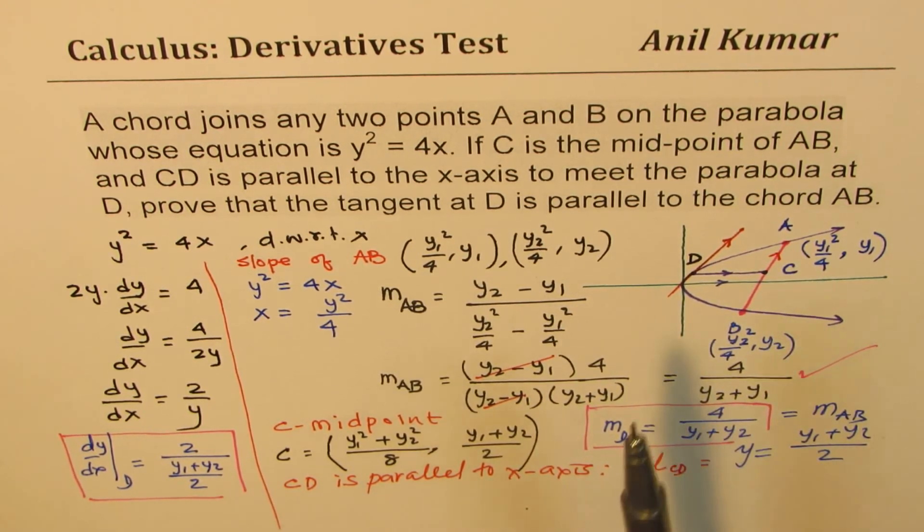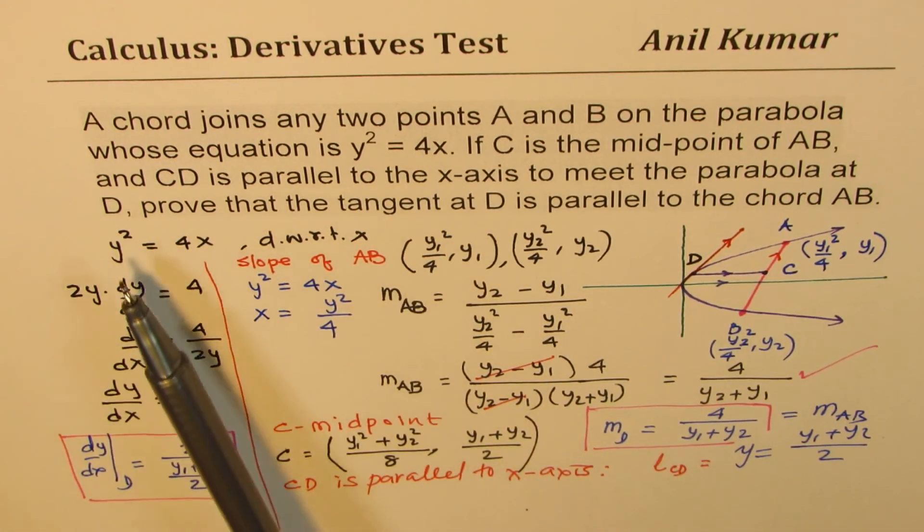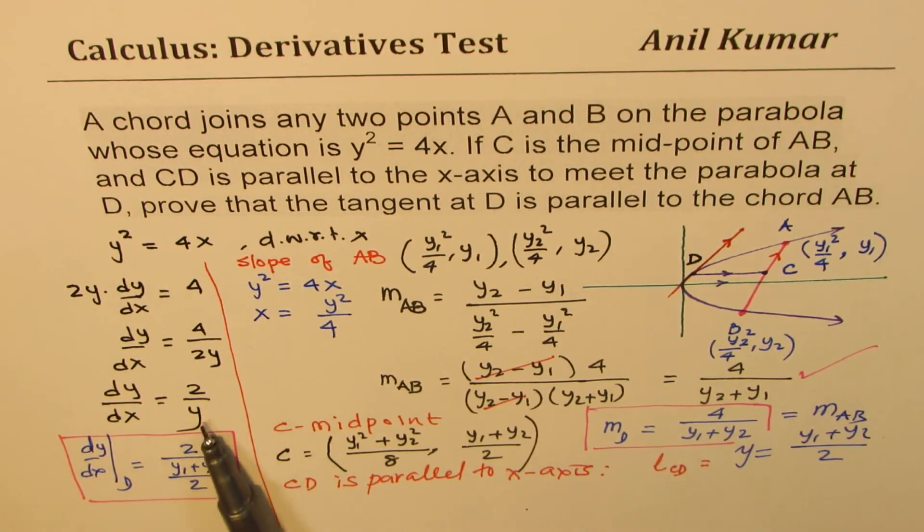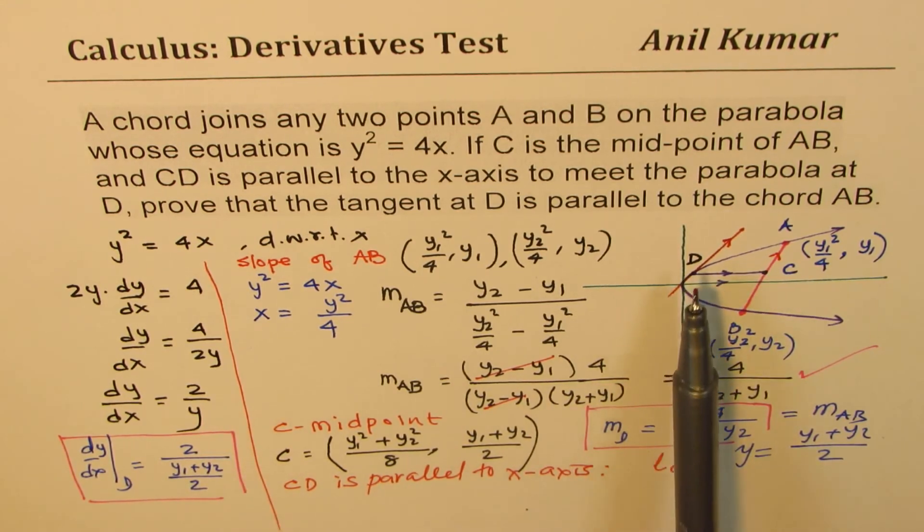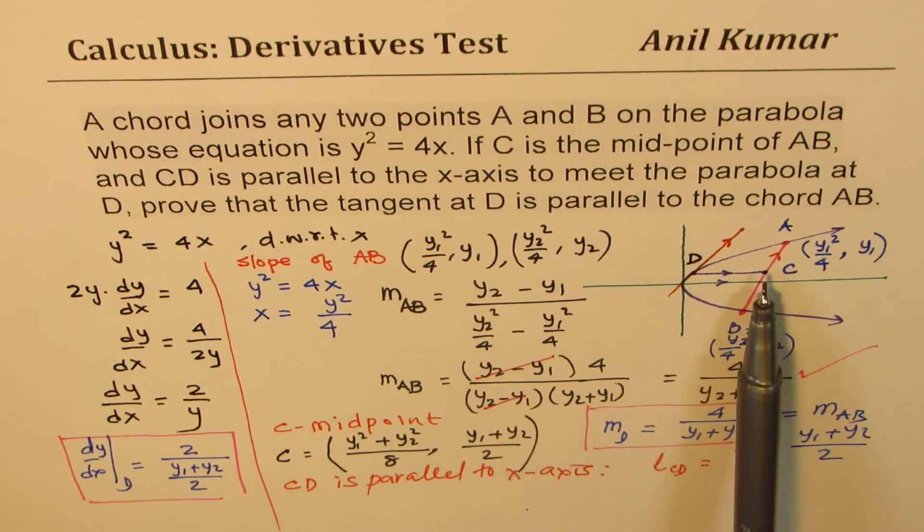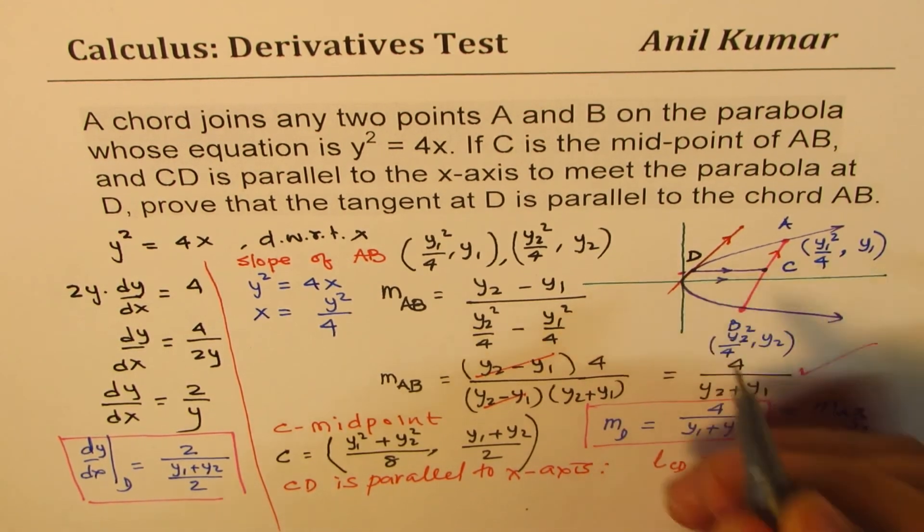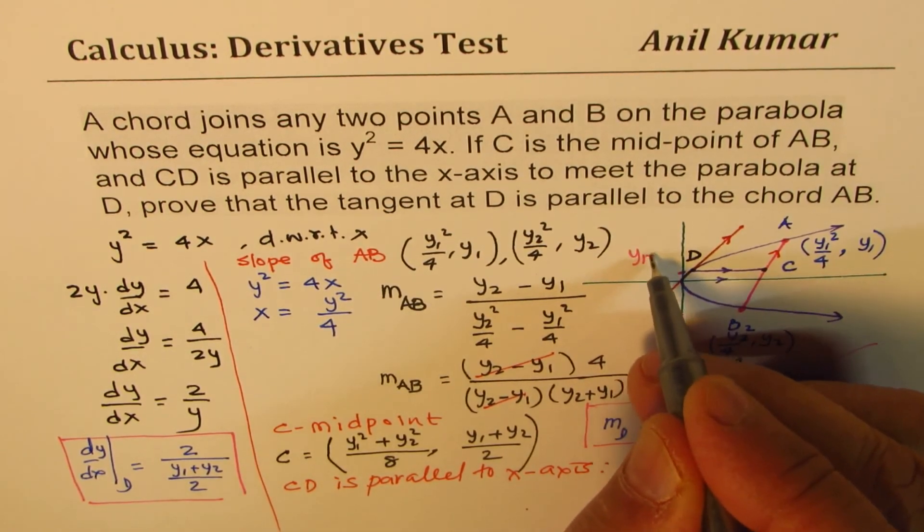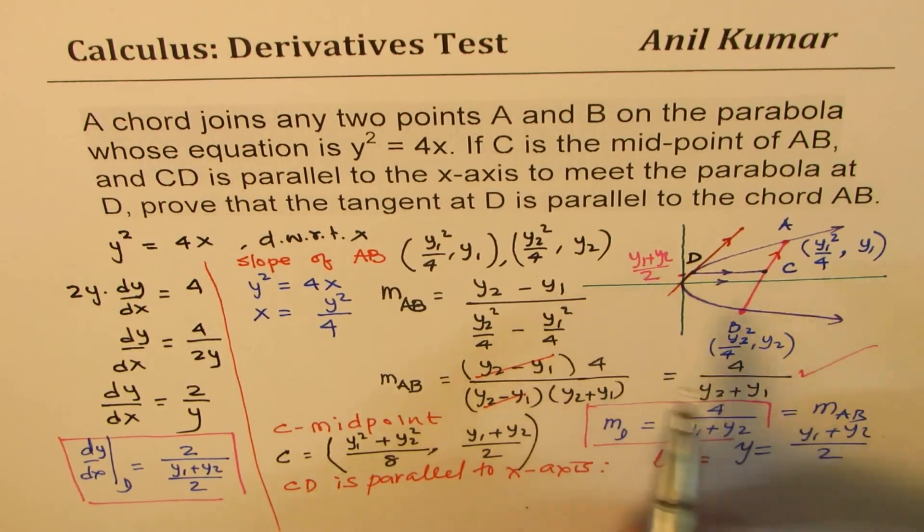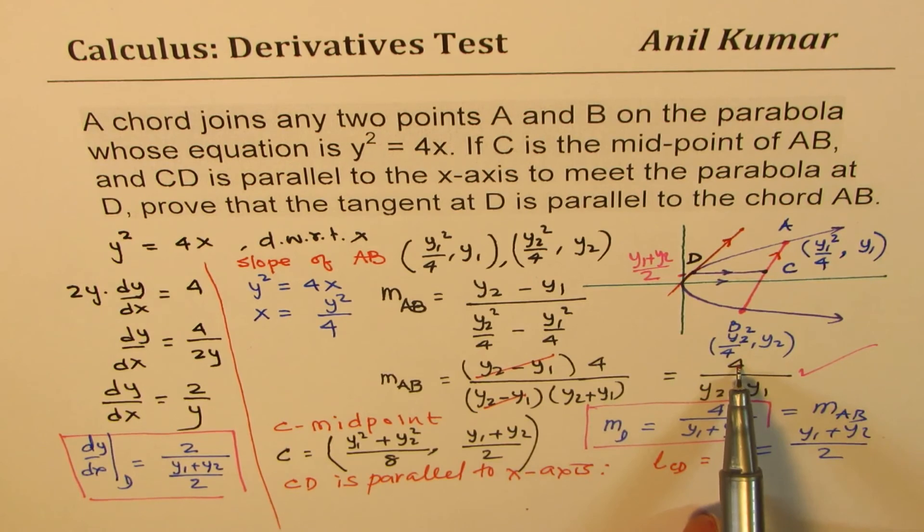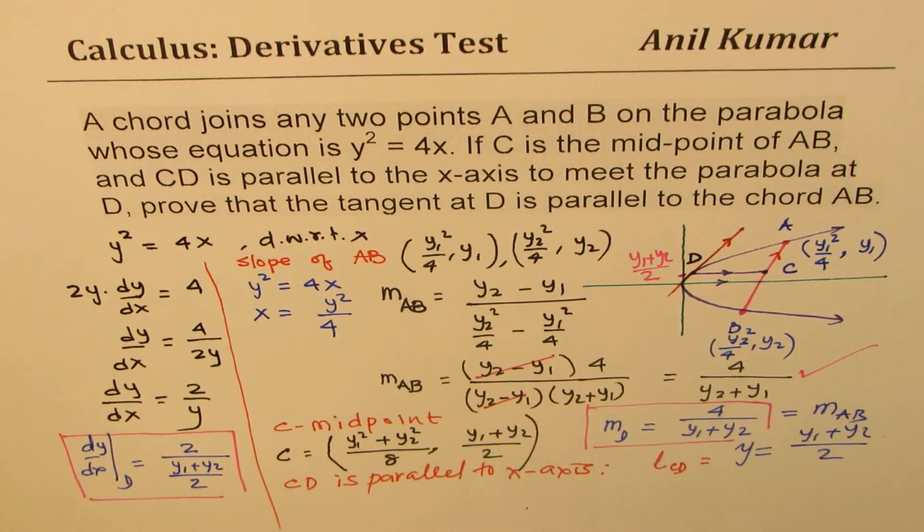Let's go back to this solution. What we did was from the equation, we found dy/dx as 2/y. Now the question is, the slope at D is 2 over y value. So to find the y value of D, which has to be same as C's y value because this line is parallel, they have the same y value, which is average of these two y values, (y₁ + y₂)/2. Since C is the midpoint, we substituted this value here, it flips to give us 4/(y₁ + y₂), which is the slope of AB. So they are both equal.